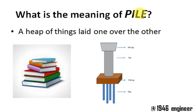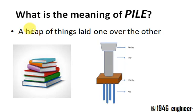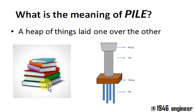Now, what is the meaning of the word pile? Pile is nothing but a heap of things laid one over the other. This is a typical example of a pile of books — books are laid one over the other.